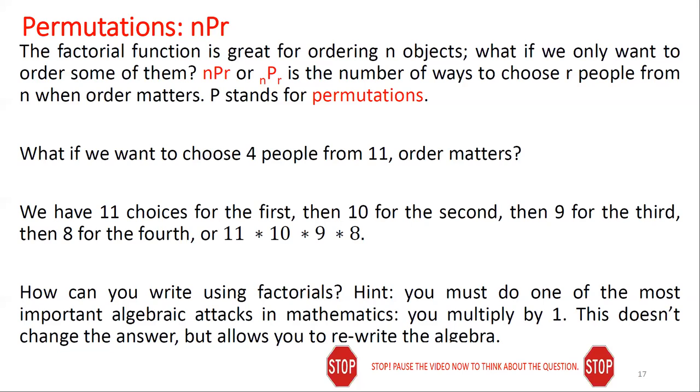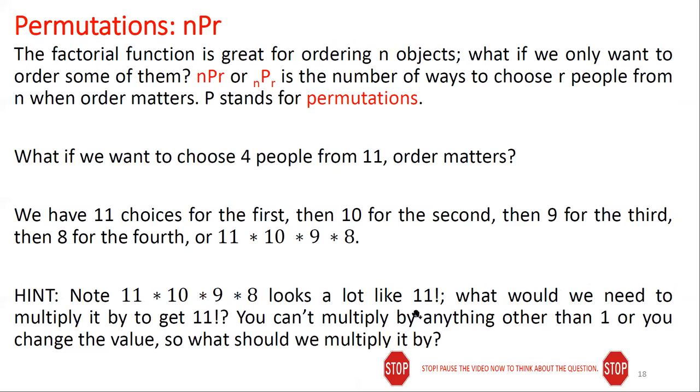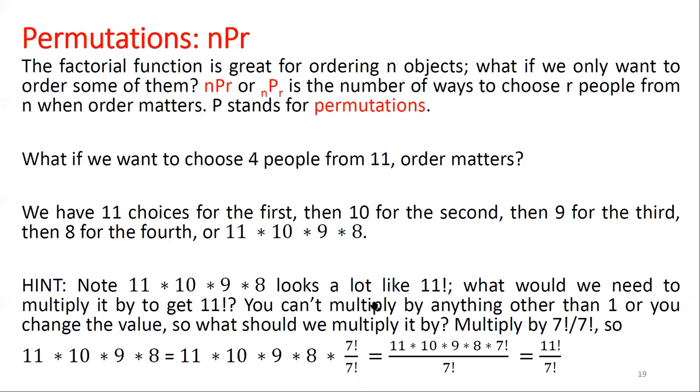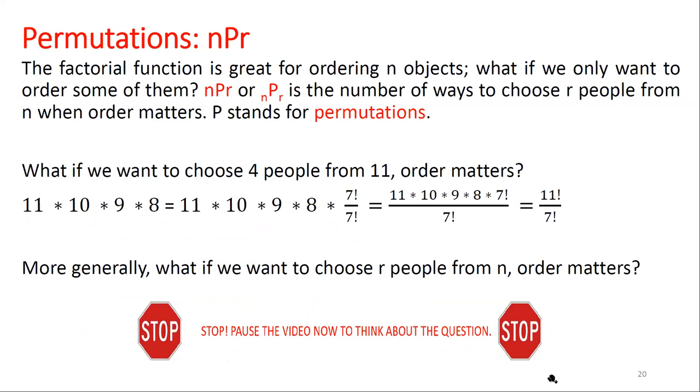Hi, welcome back. So we had a suggestion that this looks a lot like 11 factorial. And so it would be wonderful if we could just have a 7 factorial here. But we don't. How can we get 7 factorial? We can multiply by one in a clever way. And that clever way is going to be 7 factorial over 7 factorial. And when we do that, we can put this all in the numerator and we'll get 11 times 10 times 9 times 8 times 7 factorial. That's just the same as 11 factorial. And so we actually have a nice formula for 11P7. 11P7 is just 11 factorial, or sorry, 11P4 is just 11 factorial over 7 factorial. And so this is the beautiful, nice formula we have.